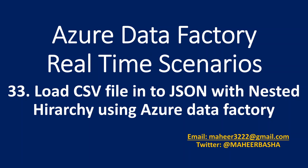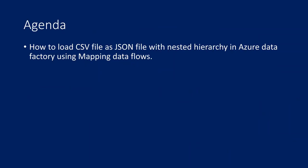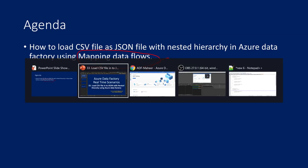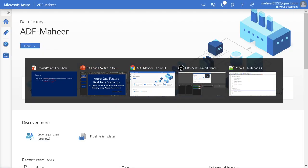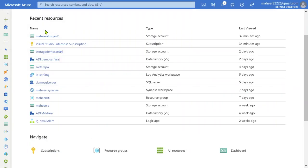Hi friends, welcome to BofastID's YouTube channel. This is part 33 in the Azure Data Factory Real-Time Scenarios Playlist. In this video, I am going to discuss how you can load a CSV file into a JSON file with nested hierarchy using Azure Data Factory, and especially we are going to use Mapping Data Flows to generate the nested hierarchies inside the JSON. I will practically explain the requirement first and then show you how to implement that.